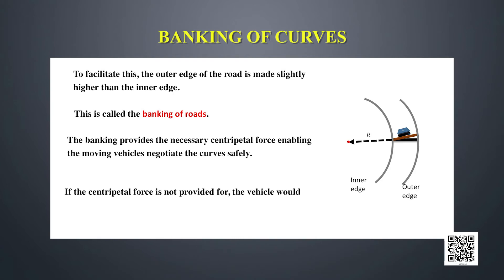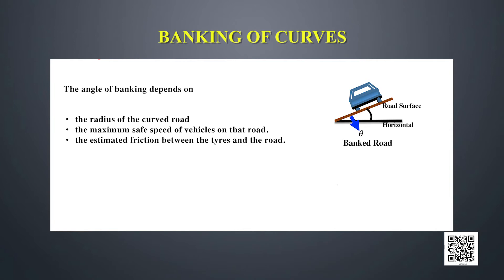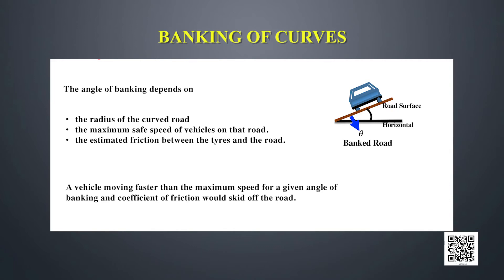If the centripetal force is not provided, the vehicle would skid towards the outer edge and may overturn. The angle of banking depends on the radius of the curved path, the maximum safe speed of the vehicle, and the estimated friction between tires and the road. A vehicle moving faster than the maximum safe speed for the given angle of banking and coefficient of friction would skid off the road causing an accident.